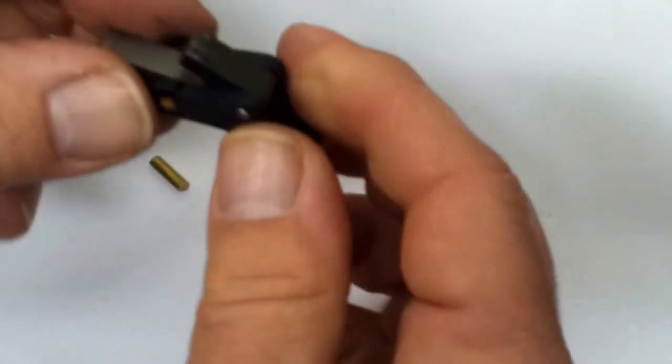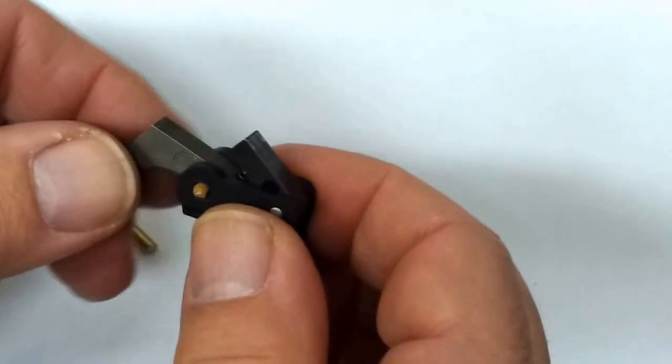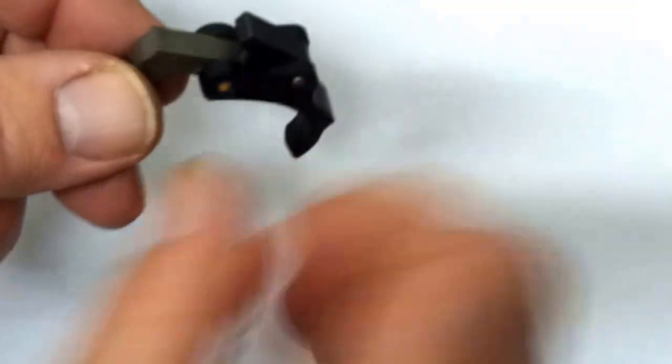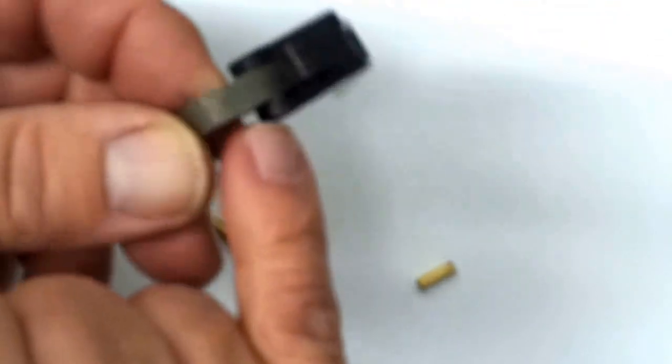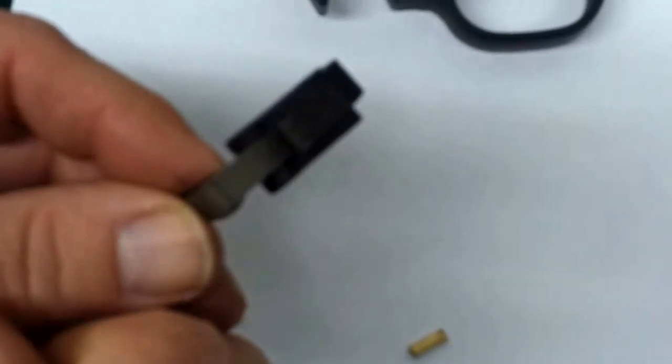And your minimum width, the shortest one that I have here that works is this wooden one that's in there now. That's 0.435 inches long. It's just got to be long enough to capture the sear inside the trigger, and then you're good to go.